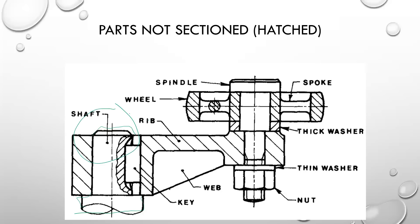We also look at a rib. If you section a rib, you have to hatch it. But interestingly, if your sectioning plane goes through a web, you do not section it. A web is normally a thin member connecting two parts. This web shown here is connecting this part and this part, also providing strengthening between the whole part. Anytime you see a web and the section line is going along the length of the web, you do not section it.